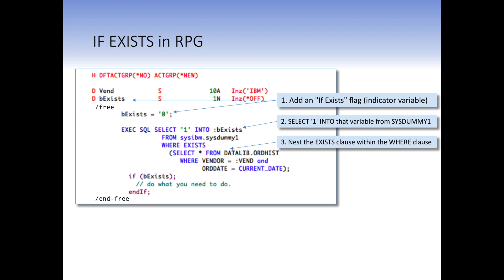Then we code the exists clause on the where statement of the primary select statement. So we say where exists and then embed the sub query like we had before with the if statement, where we just simply said if exists. Now we say select one into exists from sys dummy where exists and then we put the sub query there. Everything else from that point on is identical to the if statement.